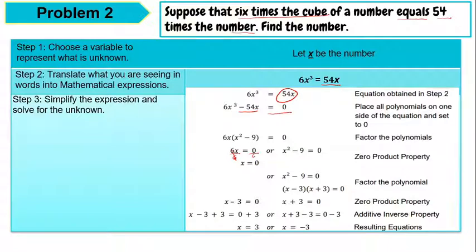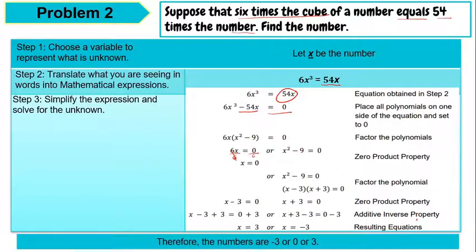Using the zero product property again: x minus 3 equals 0 and x plus 3 equals 0. Using the additive inverse property or transposition: x equals positive 3 and x equals negative 3. Therefore, the numbers are negative 3, 0, or 3.